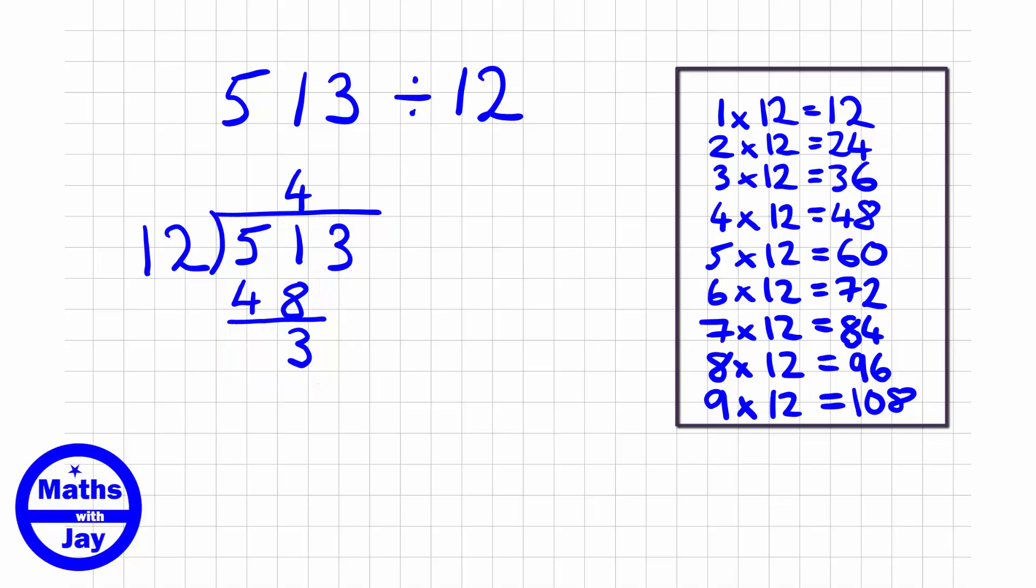And then I bring down this number here, so that I'm now looking to see how many times 12 goes into 33. So looking at my times table I can see 2 times 12 are 24, whereas 3 times 12 are 36. 36 is too big, so it goes in twice.